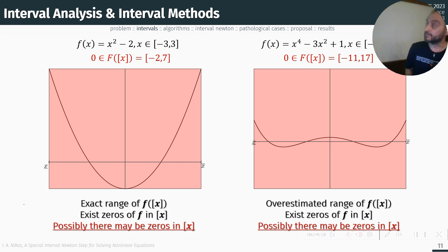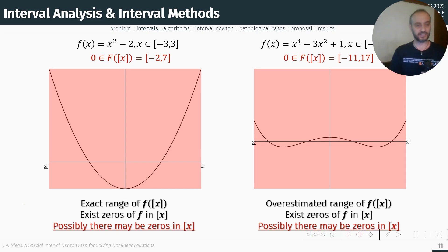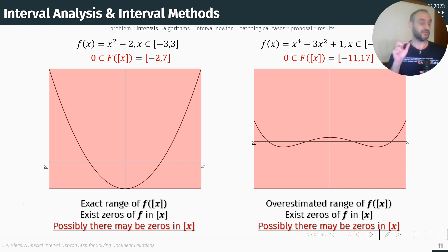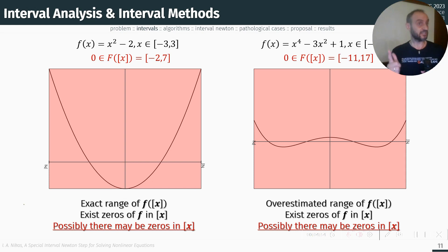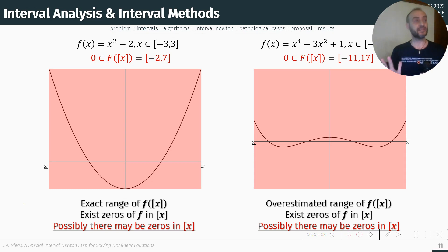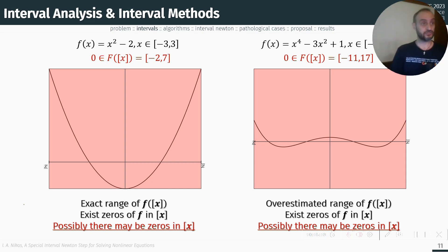Here are some examples to illustrate the nature of interval arithmetic. First, we have x² − 2 over the interval [−3, 3], where an interval calculation results in [−2, 7], meaning the estimated range contains zero — in this case the estimated range is the exact range, and the function has two zeros. In the second example we have an overestimation of the range; again we have zeros and the only thing we can say is that possibly there might be zeros in X.